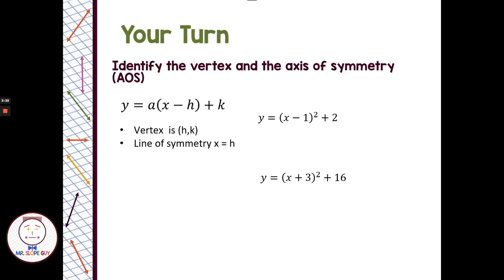I want you guys to write down both of these problems: y equals x minus 1 quantity squared plus 2, and y equals x plus 3 quantity squared plus 16. Identify the vertex and the line of symmetry, or axis of symmetry. Pause the video here, come back, and let's see how you did.